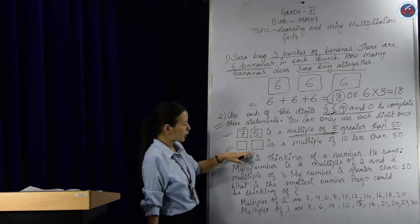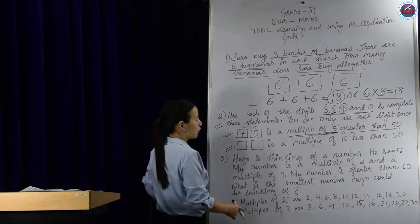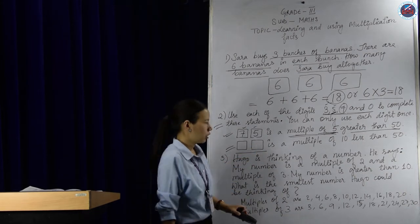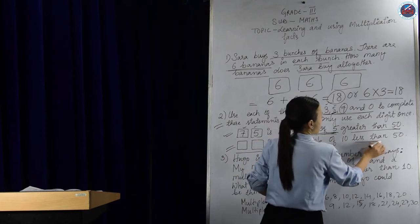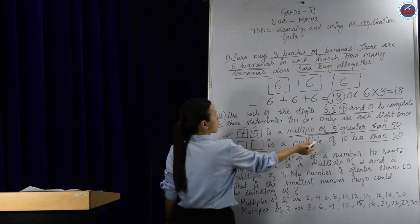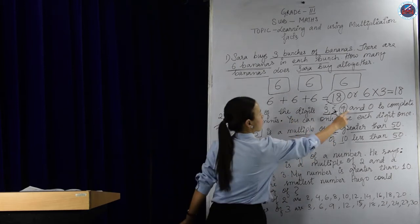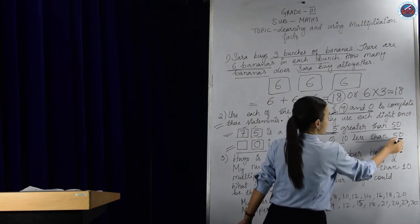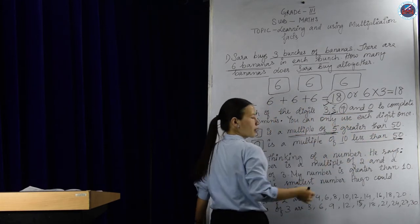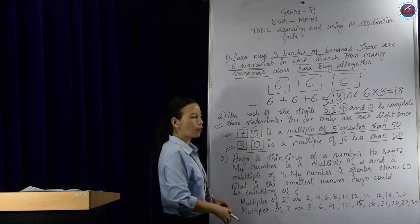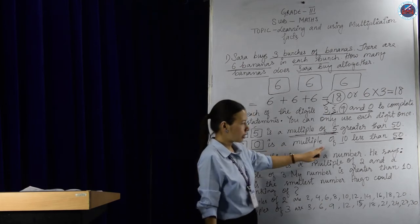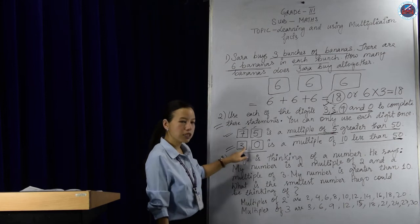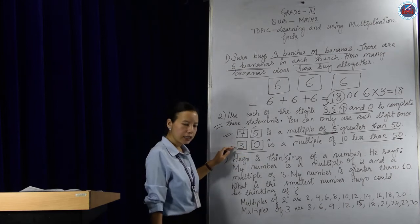Now let's go to the second statement. It says: the blank is a multiple of 10 and less than 50. Remember, for a multiple of 10, the ones-place digit must be 0. We have 0 remaining, so we use 0 in the ones place. It must also be less than 50, so the tens digit must be less than 5 — that means we use 3. That makes 30. The ones-place digit is 0, so 30 is a multiple of 10, and 30 is less than 50. So this statement is correct.